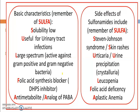To remember sulfonamide basics, use the mnemonic SULFA: S — solubility is low; U — useful for urinary tract infection; L — large spectrum, used against both gram-positive and gram-negative bacteria; F — folic acid synthesis blocker, i.e., DHPS (dihydropteroate synthase) enzyme inhibitor; A — antimetabolite and analog of PABA.